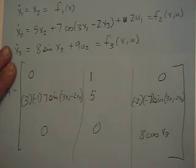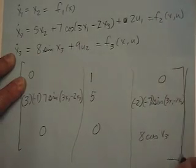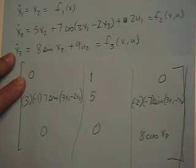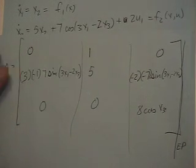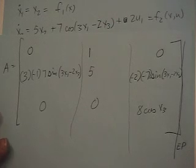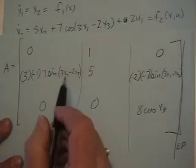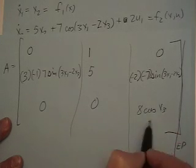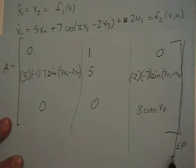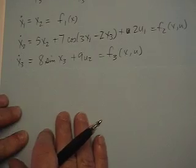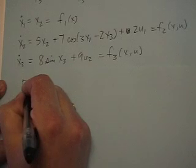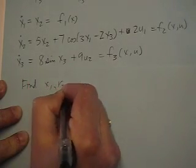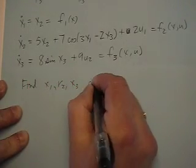It looks like I got a little ahead of myself, because now we have to evaluate this at the equilibrium point — and we haven't calculated what the equilibrium point conditions are. Evaluating at the equilibrium point means we have to put in values for x1, x2, and x3. So let's take a step back and find x1, x2, x3 at the equilibrium point.